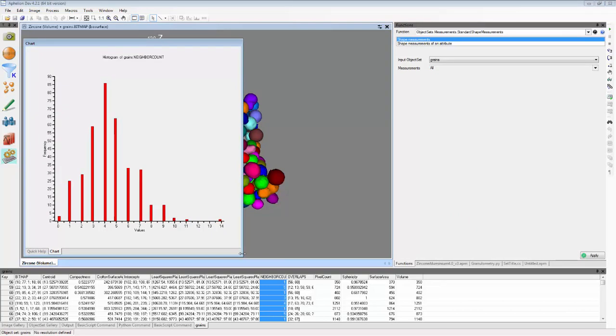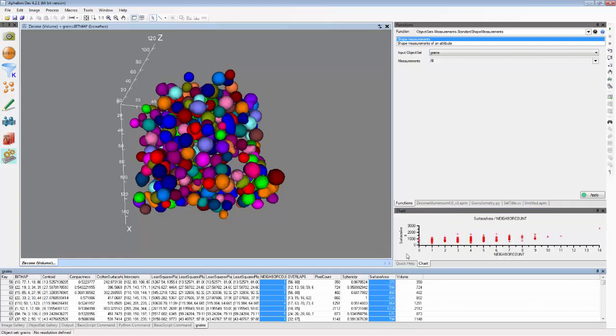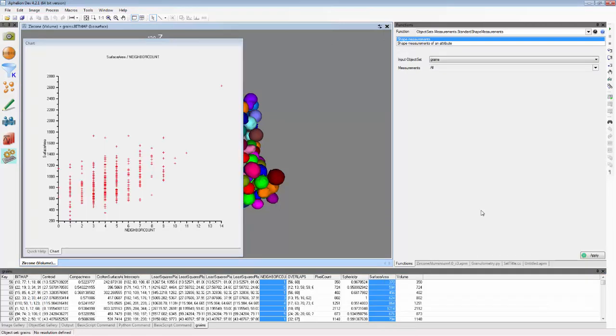Or data can be plotted as a scatter plot of two properties such as number of neighbors versus object surface area by selecting these properties and then selecting scatter plot.